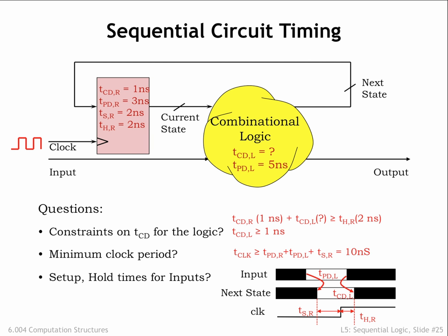Now it's pretty easy to figure out when input has to be stable before the rising clock edge—in other words, the setup time for input. The setup time for input is the sum of the propagation delay of the logic plus the setup time for the register, which we calculated at 7 nanoseconds.